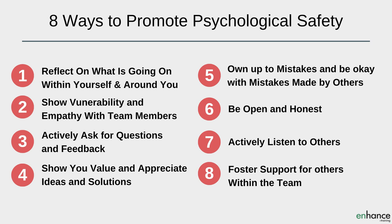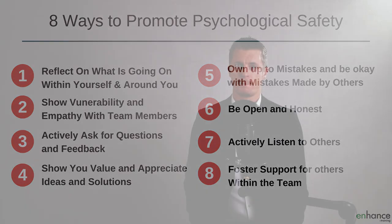Fifth, own up to mistakes and be okay with mistakes made by others. Sixth, be open and honest — promote transparency. Seventh, actively listen to others. And eighth, foster support for others within the team. Remember, work on your own self-awareness first and then work to implement these behaviours within the team to build psychological safety, essential for creating team accountability.